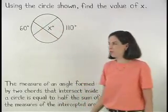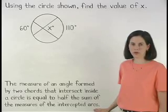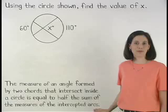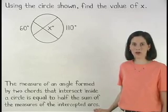And remember that the measure of an angle formed by two chords that intersect inside a circle is equal to half the sum of the measures of the intercepted arcs.